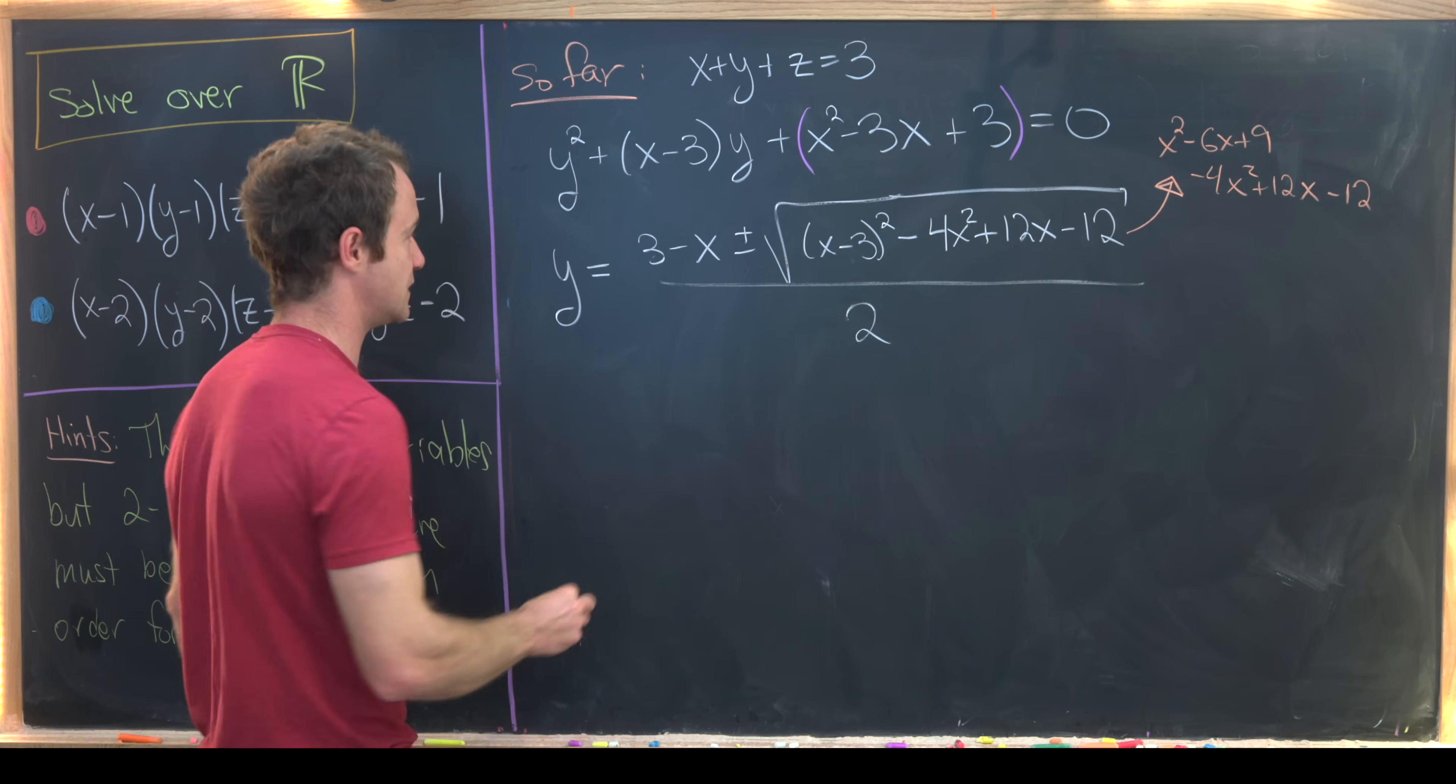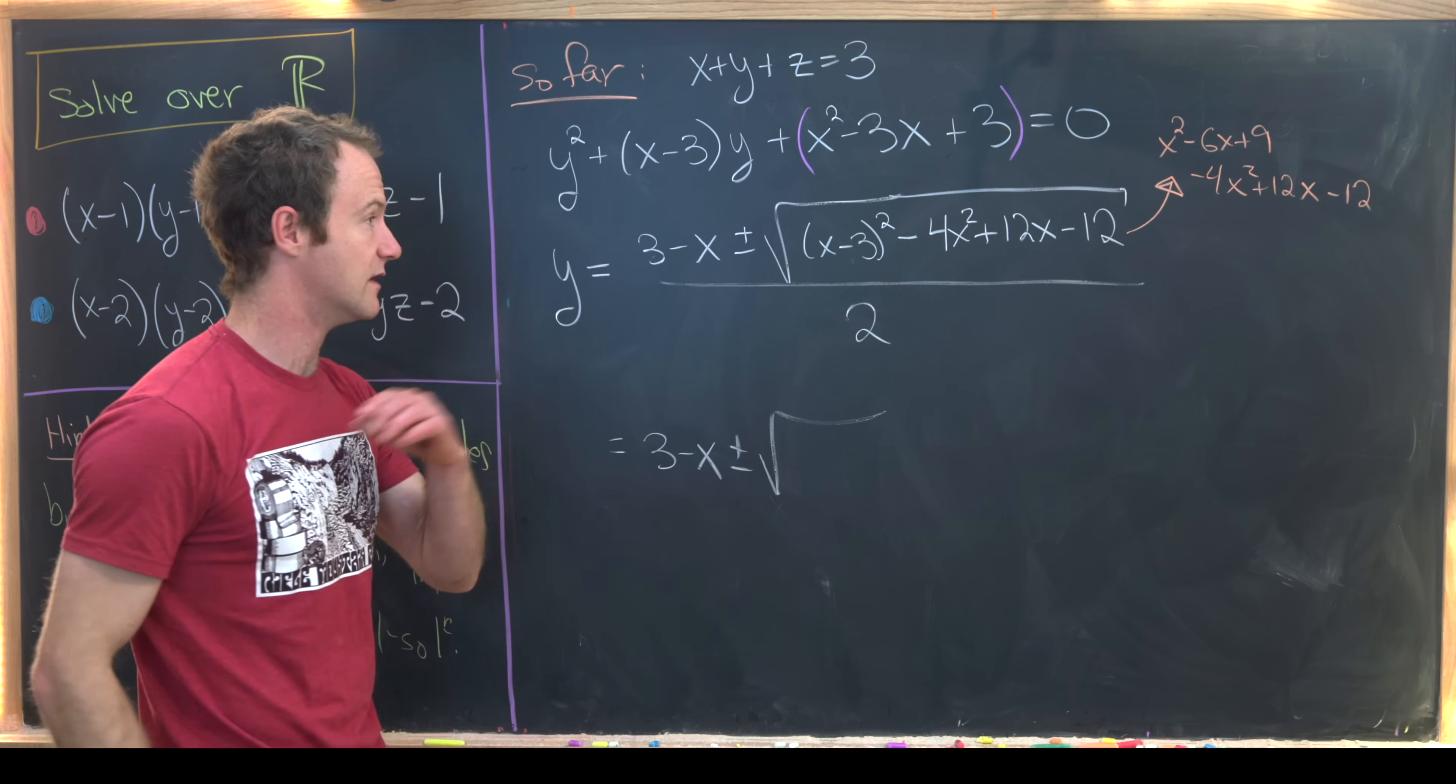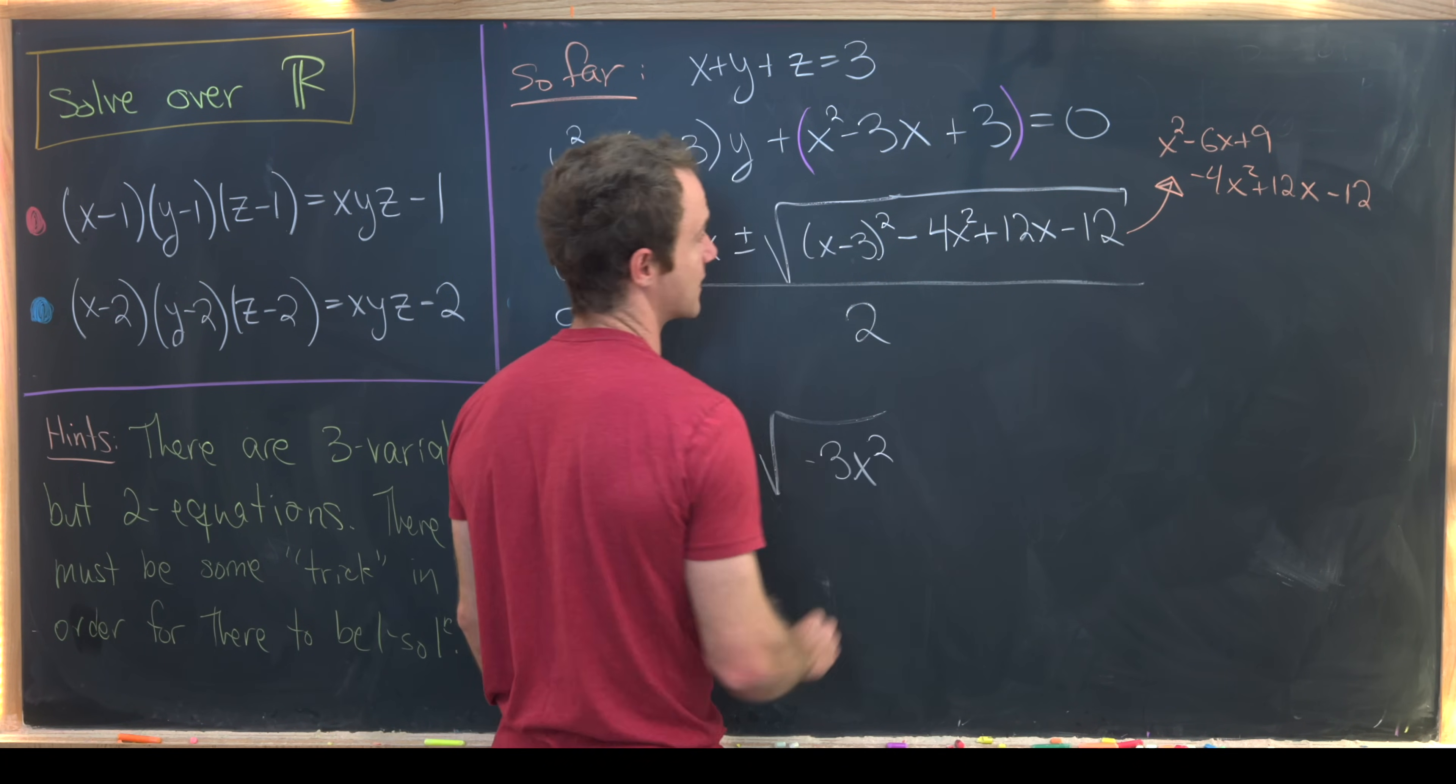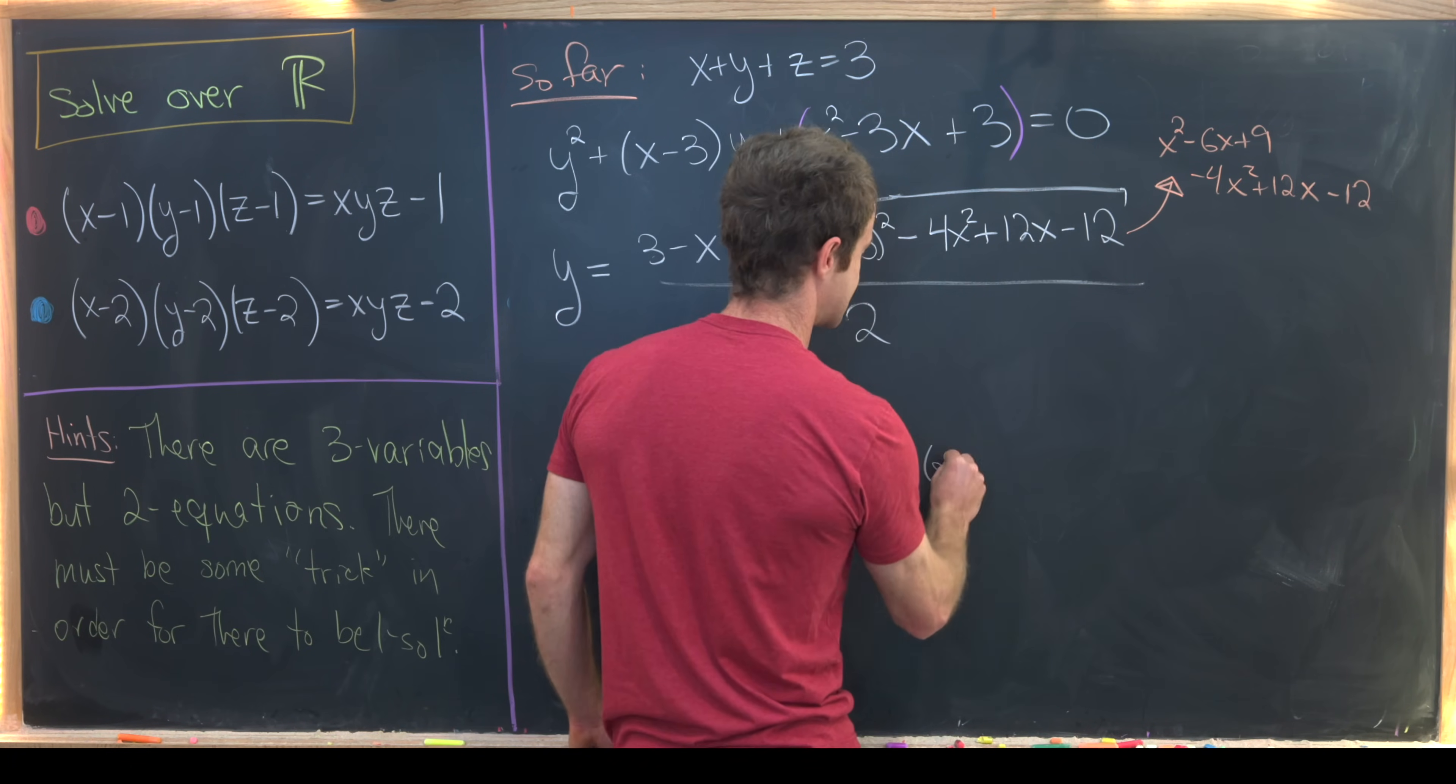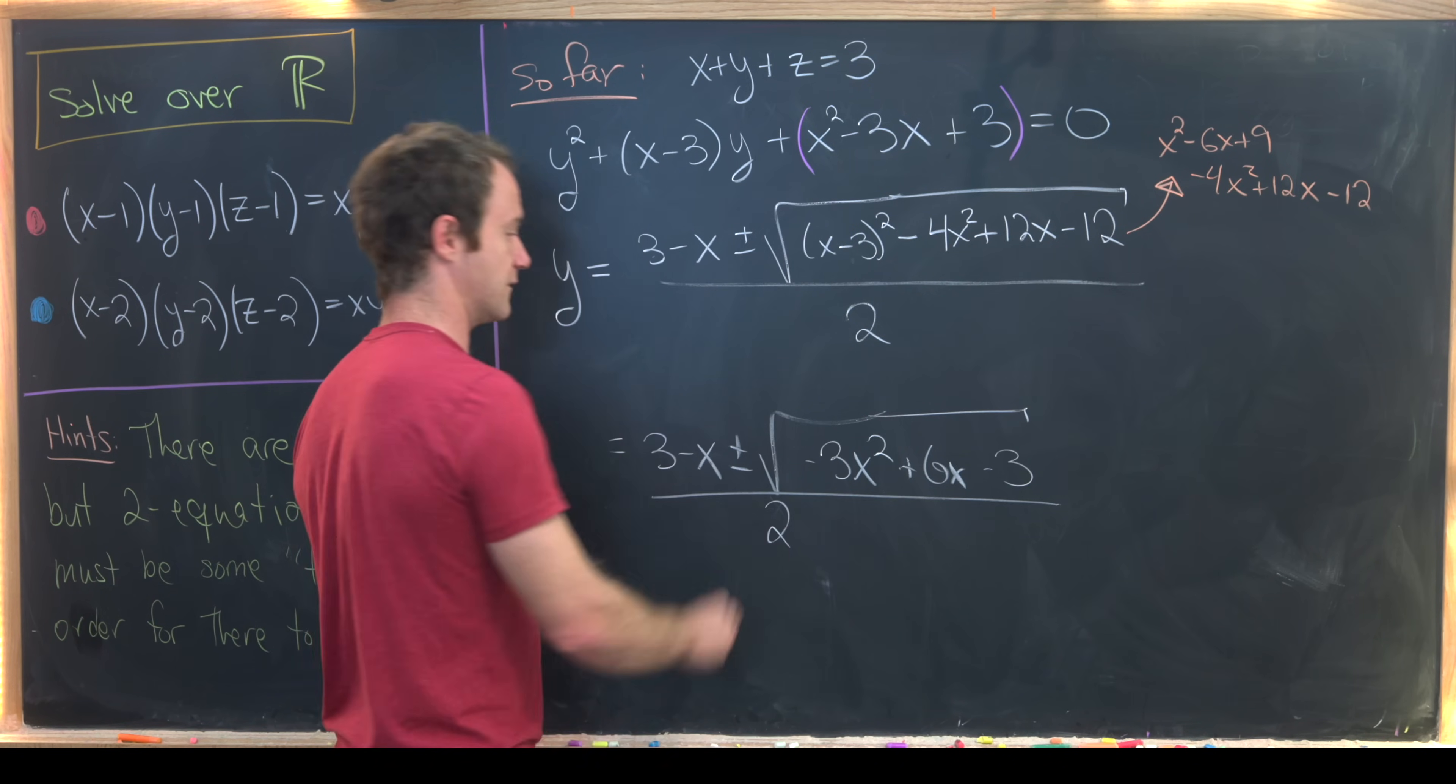Now let's simplify the interior of this radical. We'll have (x² - 6x + 9) - (4x² - 12x + 12). So we've got (3 - x) plus or minus the square root of -3x² + 6x - 3, all over 2.